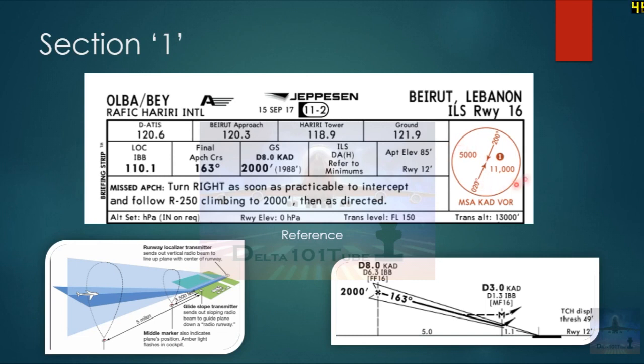Coming back to this part, this is the localizer which is denoted by the identifier IBB or India Bravo Bravo, having a frequency of 110.1. The final approach course is 163 degrees. The glide slope starts at 8.0 DME CAD, or 8 nautical miles from CAD, and has a final approach fix of 2,000 feet for ILS. The airport elevation is 85 feet and the runway elevation is 12 feet.